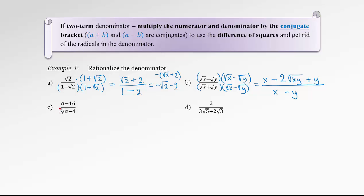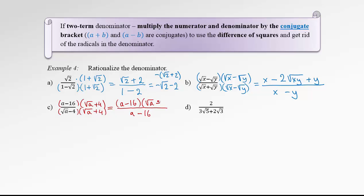Let's see the next example. Again, multiply the top and the bottom by the conjugate bracket — in this case root a plus 4, here and there. Let's start with the denominator: difference of squares gives us root of a squared, which is just a, minus 4 squared, which is 16. That's the same bracket as in the numerator, so in factored form we can see that these two factors can be reduced. The final answer is really nice — no fractions anymore. It is just root a plus 4, which is a lot nicer than the original expression.